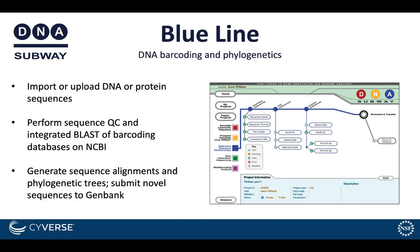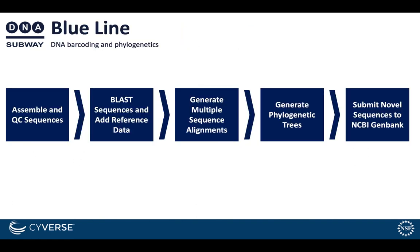DNA Subway Blueline is a workflow for DNA barcoding and biogenetics. You can import or upload your own DNA sequences and perform a variety of analyses including BLAST, tree generation, and submission to GenBank. Once you've assembled and QC'd your DNA sequence, you can perform a BLAST search and add reference data, generate multiple sequence alignments as well as phylogenetic trees, and novel sequences can be submitted directly to NCBI GenBank.